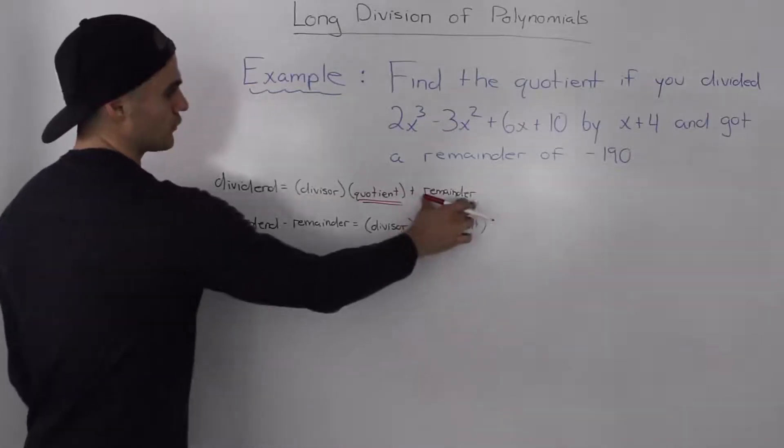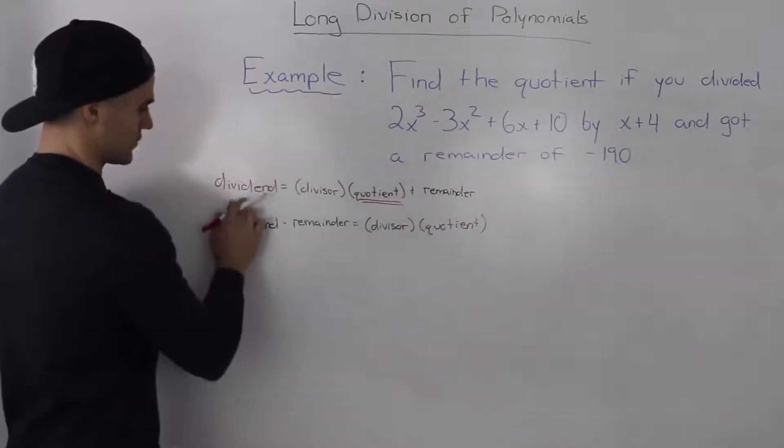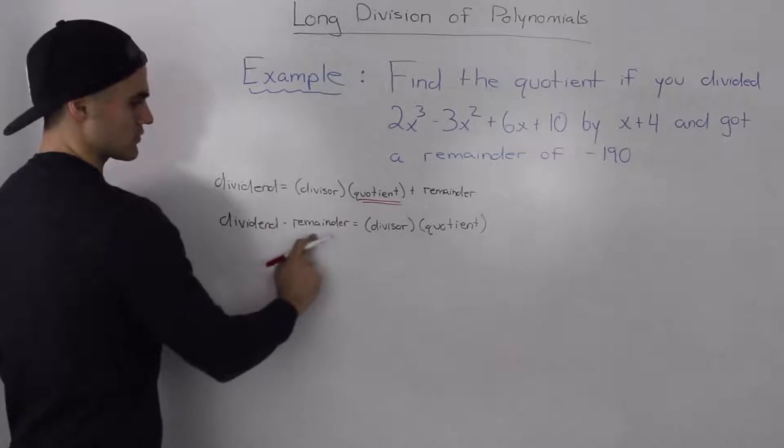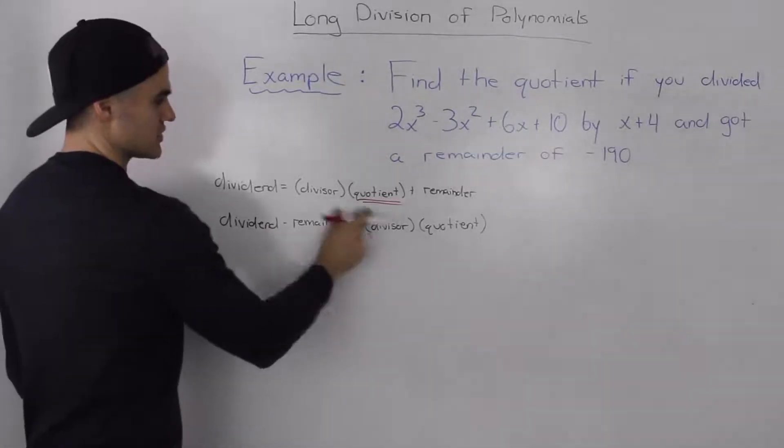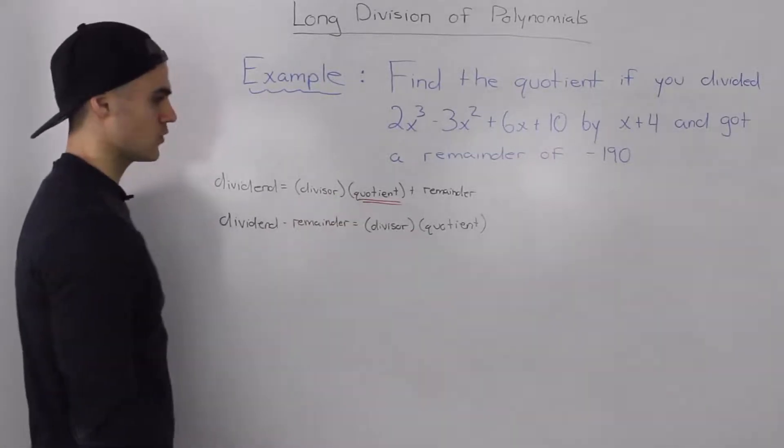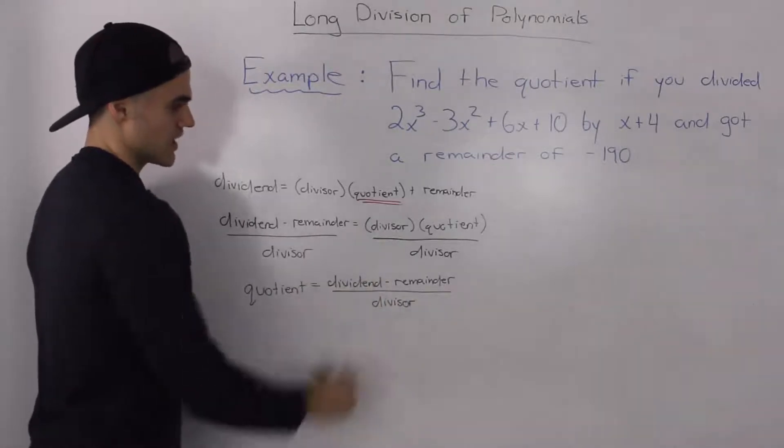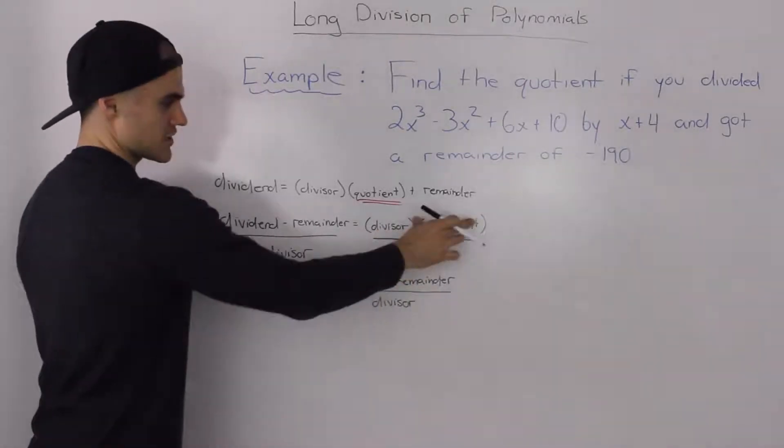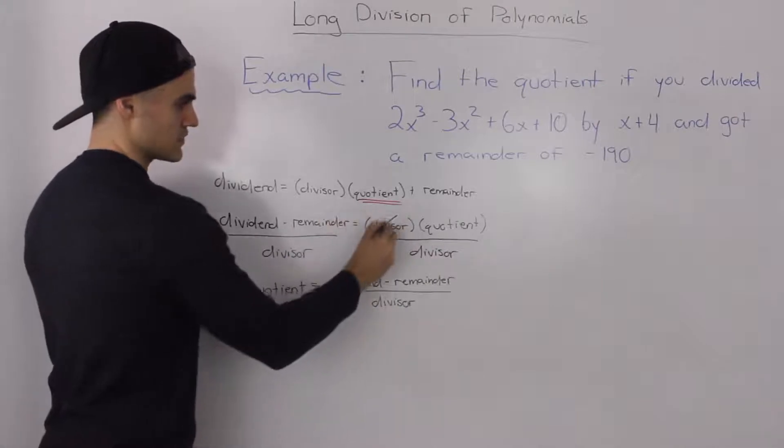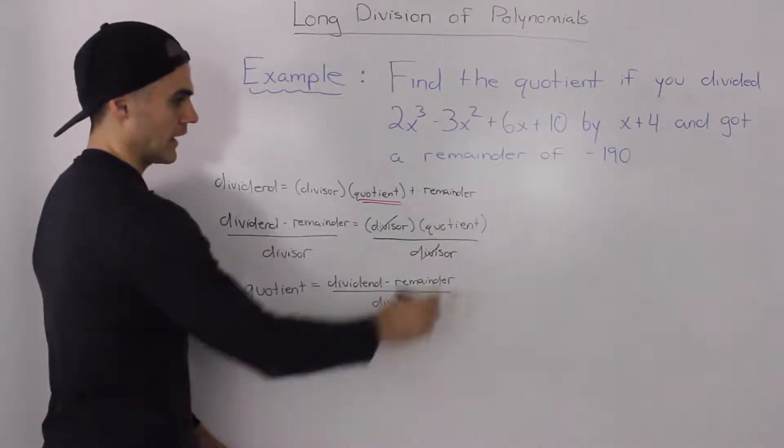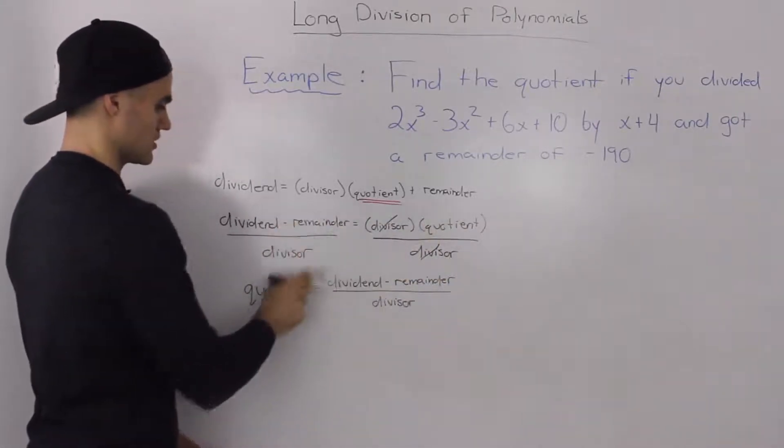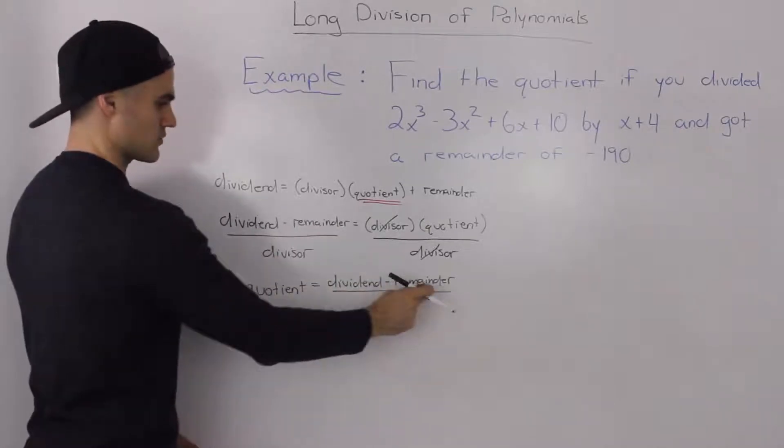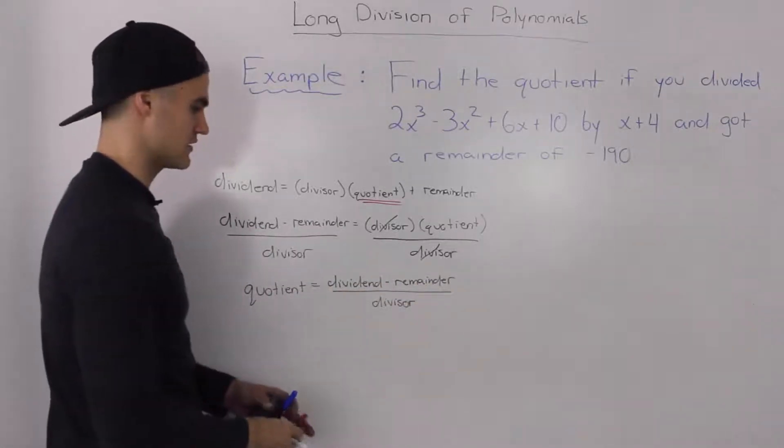So how would we do that? Well we would first have to bring the remainder over so we'd have the dividend minus the remainder equals the divisor times the quotient. Then we would divide both sides by the divisor to get the quotient by itself, so the divisors cancel out and we'd end up having the quotient equals the dividend minus the remainder over the divisor.